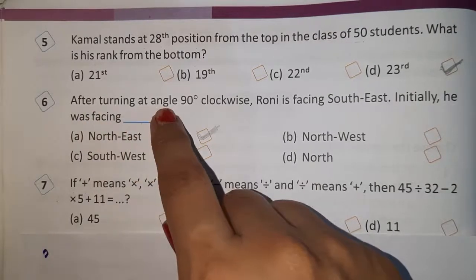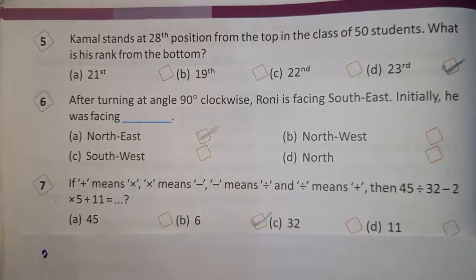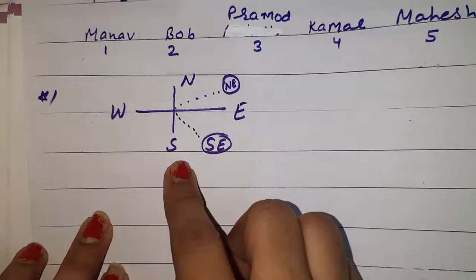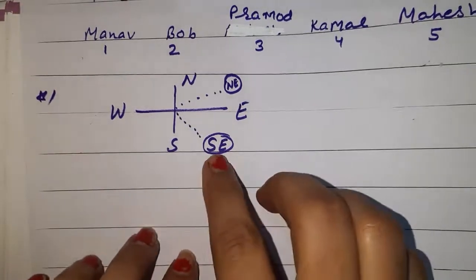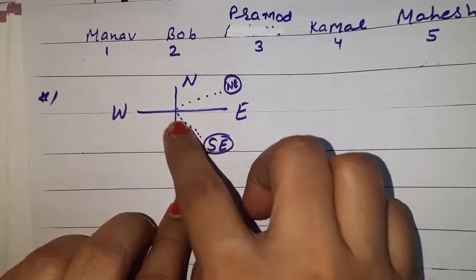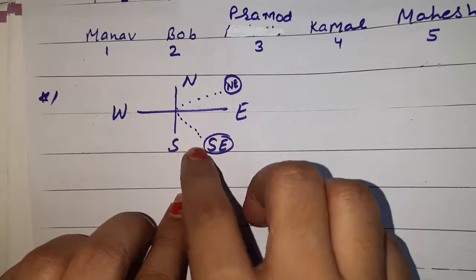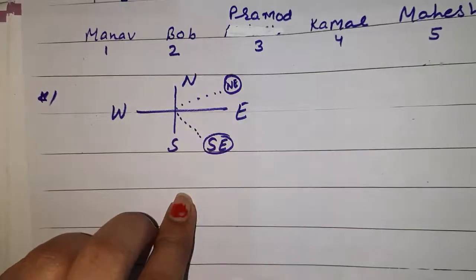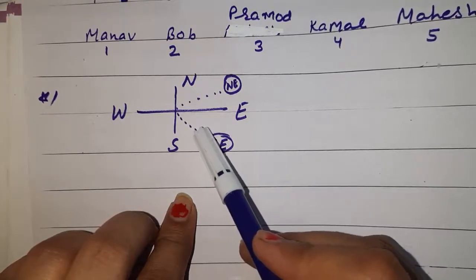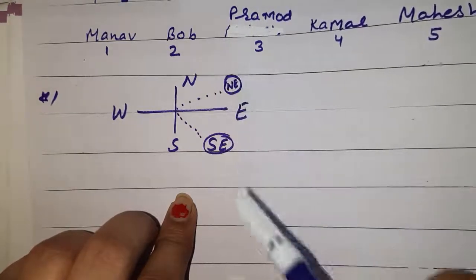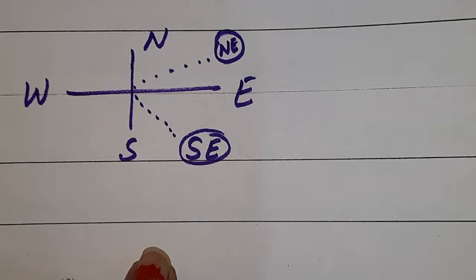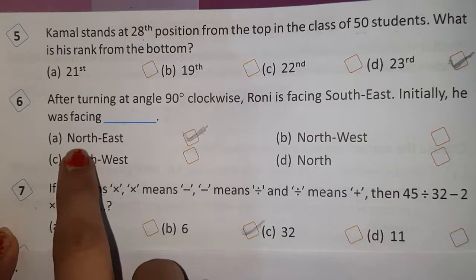Question 6. After turning 90 degrees clockwise, Roni is facing south-east. Initially he was facing — dash. Now see: east, west, north, south. Roni, after turning 90 degrees clockwise, is at south-east. The question is where he was facing initially. Since he turned clockwise, we move back 90 degrees — he was at north-east direction. He was facing north-east. So option A is correct.